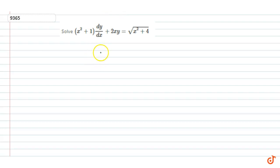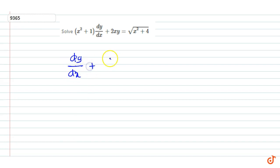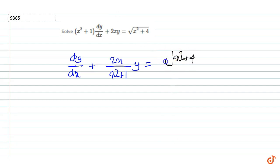In this question we solve the differential equation (x² + 1) dy/dx + 2xy = √(x² + 4). Dividing throughout by x² + 1, we get dy/dx + [2x/(x² + 1)]y = √(x² + 4)/(x² + 1).